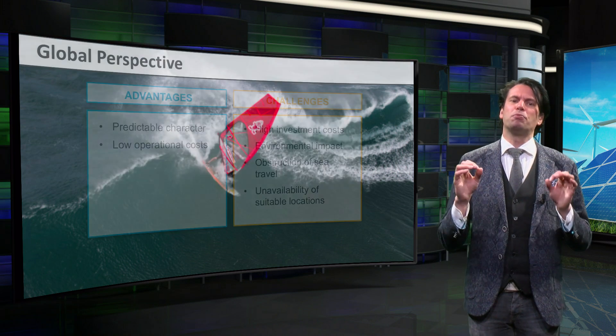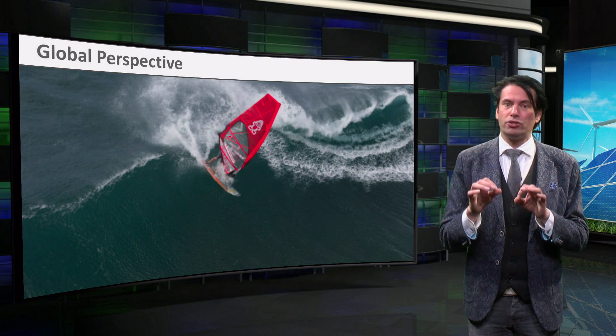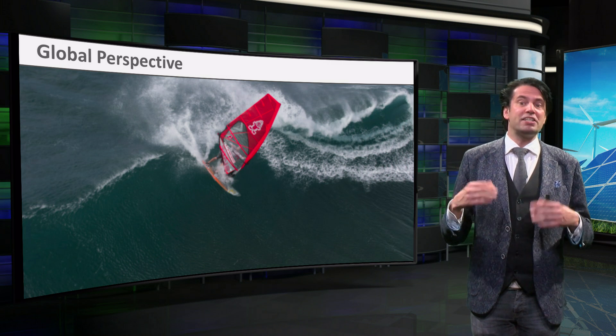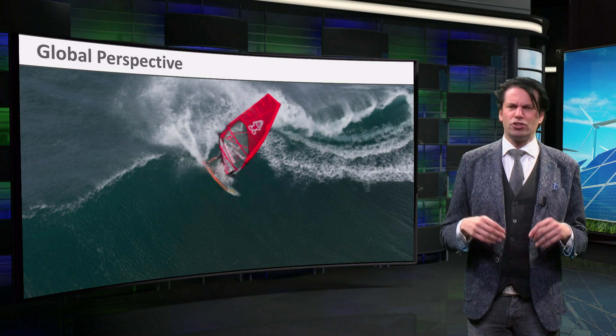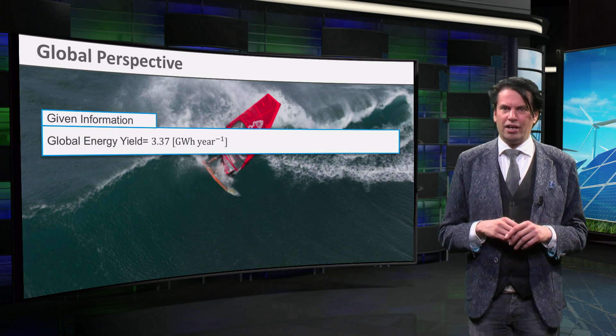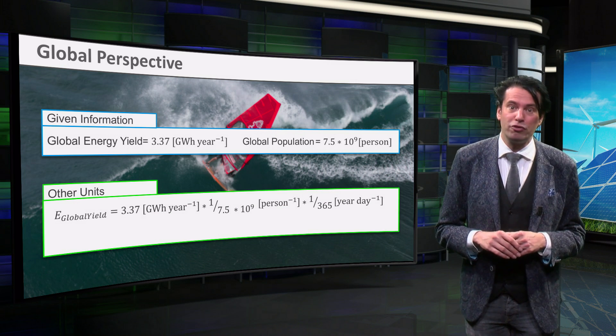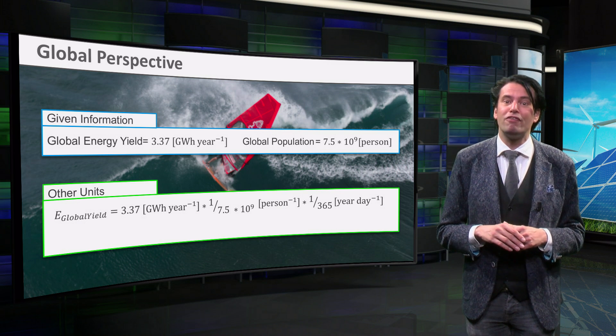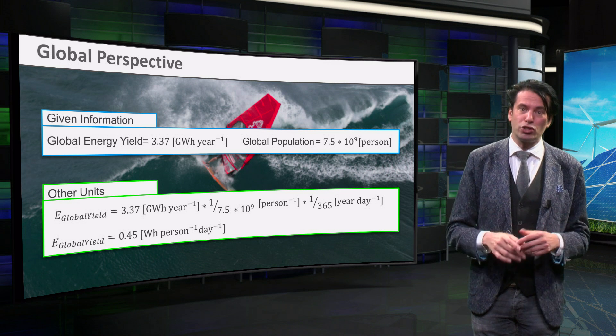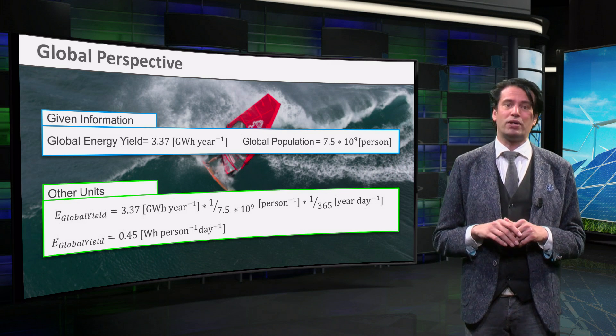Let's look at wave energy from the world's perspective. In 2016, the global installed capacity was 1.1 MW. According to the capacity factor of 35%, the global energy yield is 3.37 GWh. If we take a world population of 7.5 billion people, this results in a global yield of about 0.45 Wh per person per day. However, it has been predicted that the total potential could reach 29,500 TWh per year.